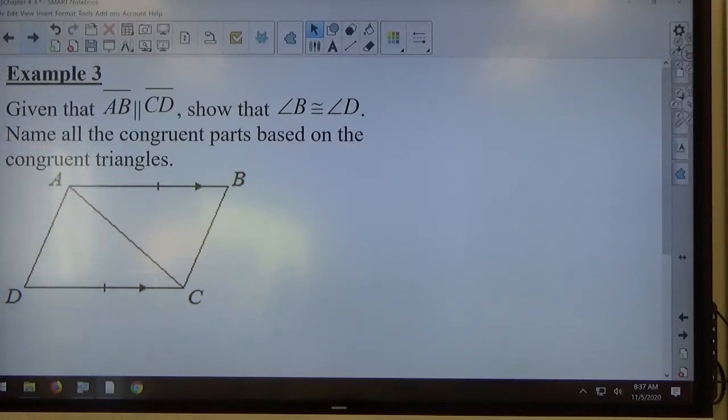Okay, it says given that AB is parallel to CD, show that angle B is congruent to angle D. Name all the congruent parts based on the congruent triangles.